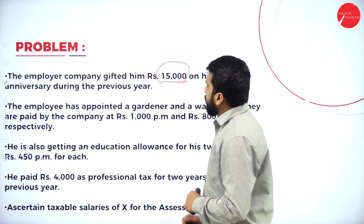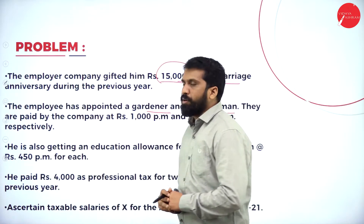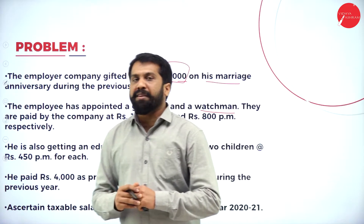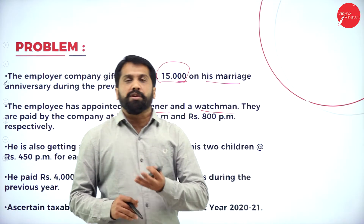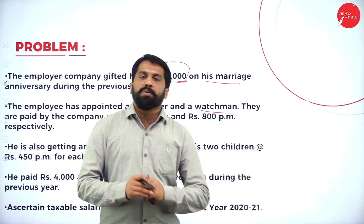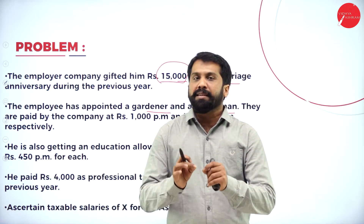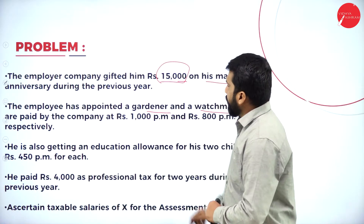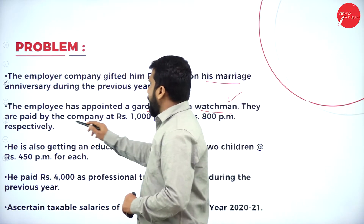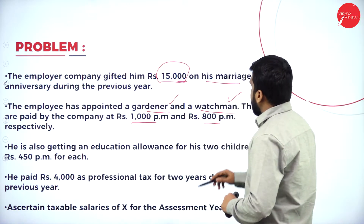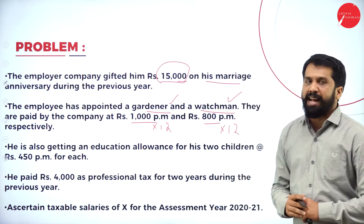The employee has been appointed a gardener and a watchman. Whatever benefit given like a watchman, sweeper, gardener, cook, or any helping hand given to the employee by the employer is completely taxable. The gardener is paid 1,000 per month and the watchman 800 per month by the company — both 1,000 into 12 and 800 into 12 are completely taxable.